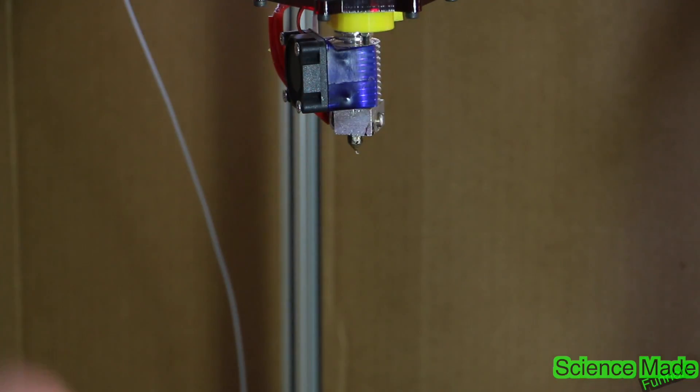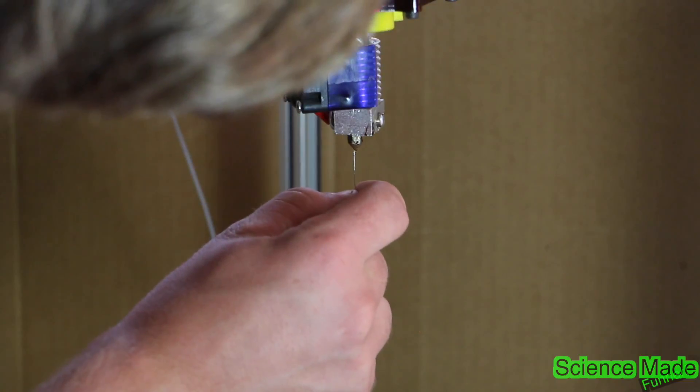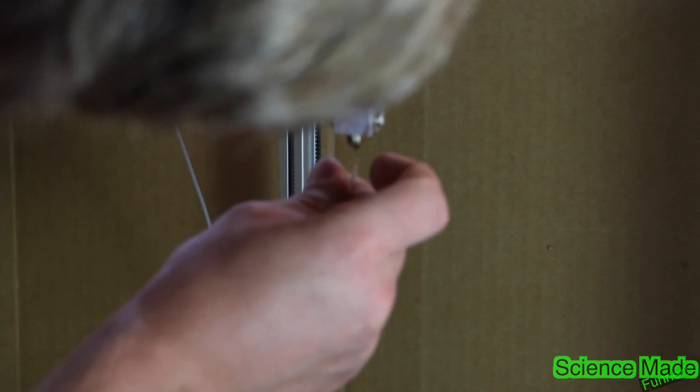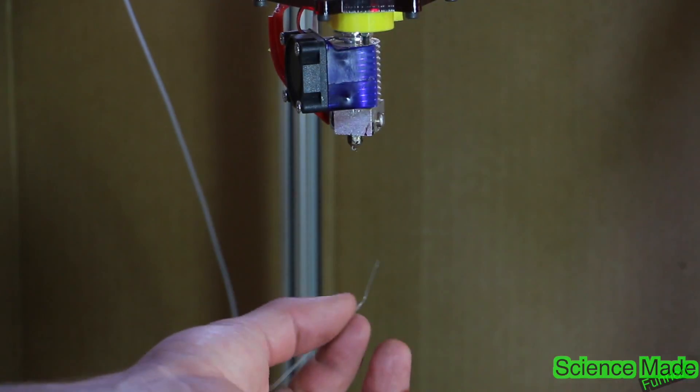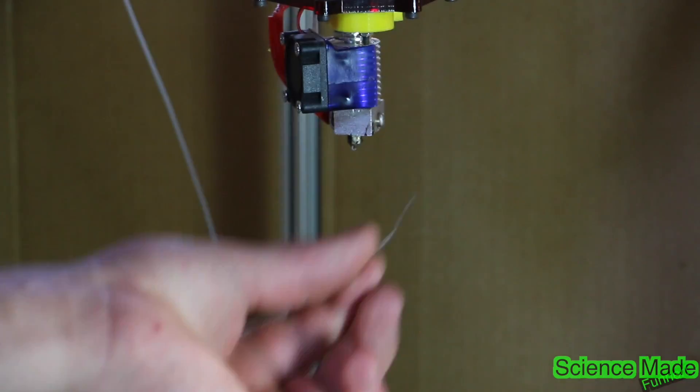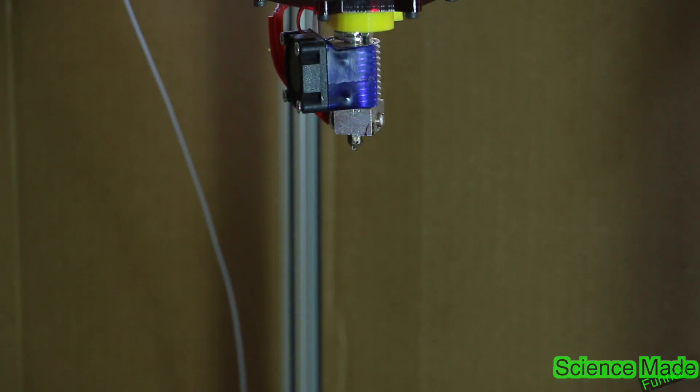The next thing we want to do is just stick this wire up the tip. It takes a bit of fiddling, but there we go. Basically just push that through and pull that out, and it's unclogged. Push a bit of plastic through.